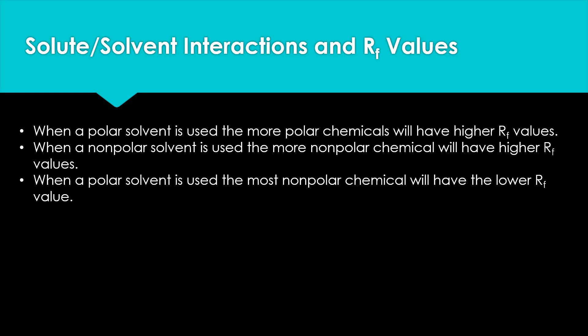To summarize: when you have a polar solvent, the more polar chemicals will have a higher Rf value and travel towards the top of your chromatography paper. The ones that travel furthest match the polarity closer to your solvent. If you have a nonpolar solvent, the more nonpolar chemical will have the higher Rf value and be at the top. Conversely, with a polar solvent, the most nonpolar chemical will have the lowest Rf value and be at the bottom. The polarity of your solvent helps you determine the polarity of the chemicals you're separating.